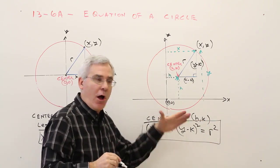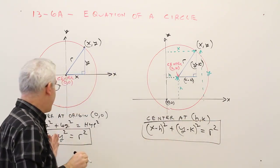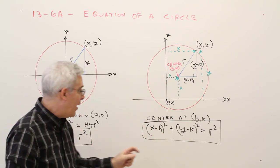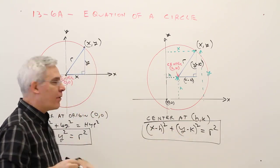If you want, you could always use this one, even if you're at the origin, because if you're at the origin, x minus 0 reduces to x, and y minus 0 reduces to y.